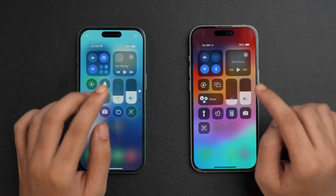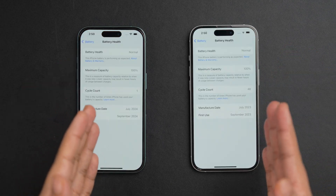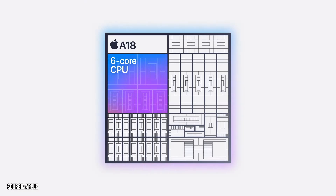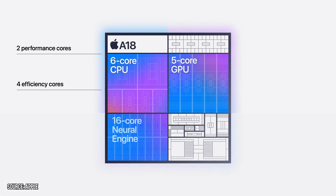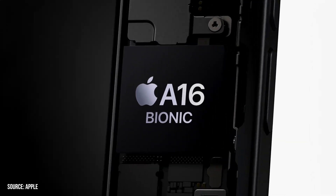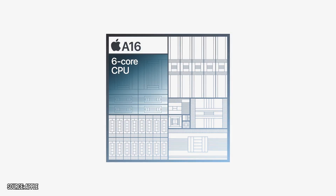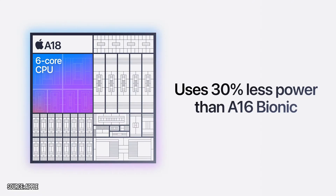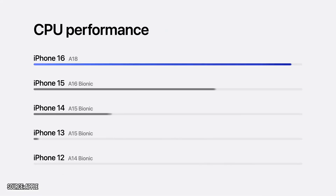Both of these phones are completely charged and have 100% battery health. The iPhone 16 has the A18 chip, which consists of a 6-core CPU, a 5-core GPU, and a 16-core neural engine. The iPhone 15 has the A16 Bionic chip, which also has a 6-core CPU, 5-core GPU, and 16-core neural engine. It was stated in the keynote that the A18 chip is 30% faster than the A16 Bionic chip.